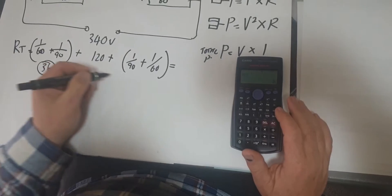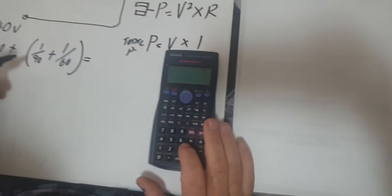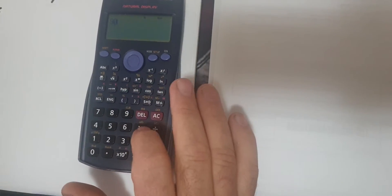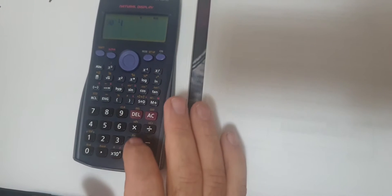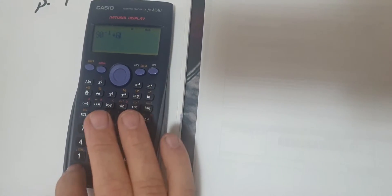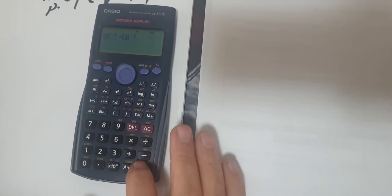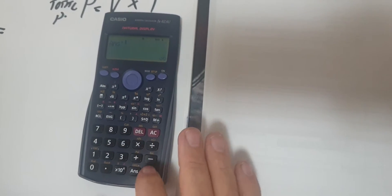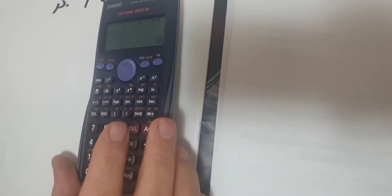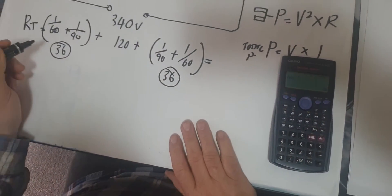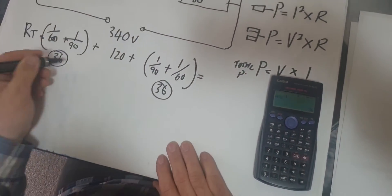Now I'll do the second one. 90, X to the minus 1, plus 60, X to the minus 1, equals, push the answer, equals, and we get 36. Same thing, still works out the same because they're both the same.